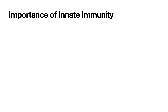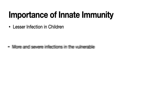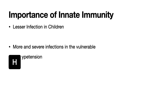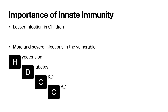The importance of innate immunity is illustrated by the lesser infection seen in children, likely because of their robust innate immunity. We also see more severe infection in vulnerable patients — those who are hypertensive, diabetic, have CKD, or coronary artery disease — because these patients have a reduced innate immunity, predisposing them to severe COVID-19.